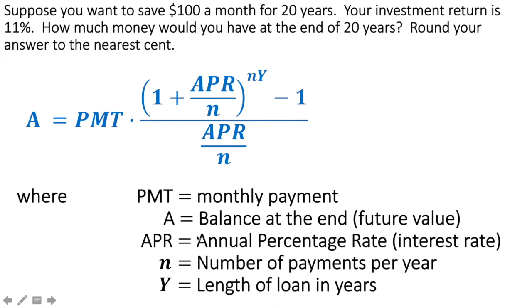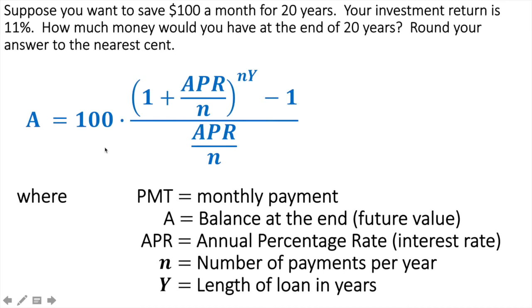Now we're going to start plugging in the stuff that we know. The first one is the monthly payment amount — we know that, it's $100. So instead of writing PMT, I'm going to substitute in $100. Next up, we have the balance at the end. Well, we don't know that — that's what we're trying to solve for, so we're not too worried about that.